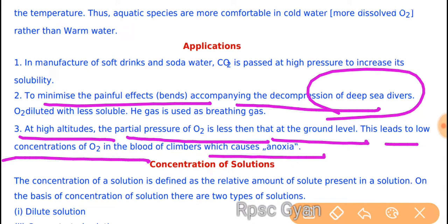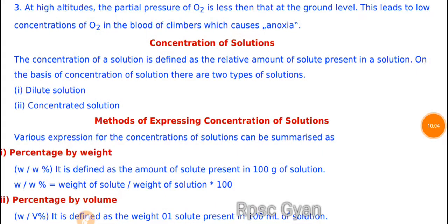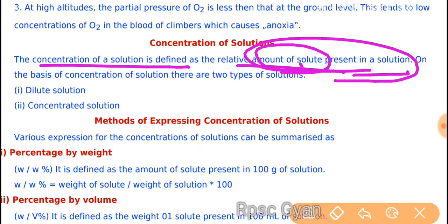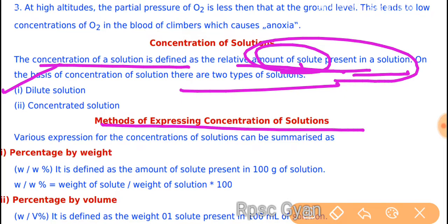This leads to low concentration of O₂ in blood of climbers, which causes anoxia. When we go to the mountain, the air density is reduced and the oxygen level is reduced, so climbers have problems. The concentration of a solution is defined as the relative amount of solute present in a solution. On the basis of concentration, there are two types: a dilute solution, which has a very low amount of solute, and a concentrated solution. We use various methods to express concentration.